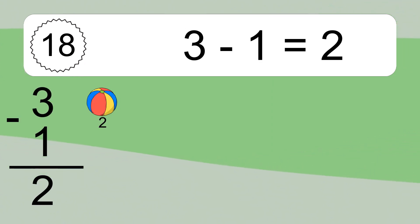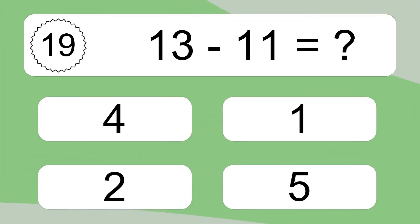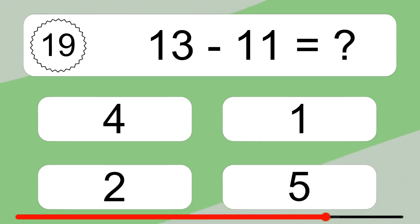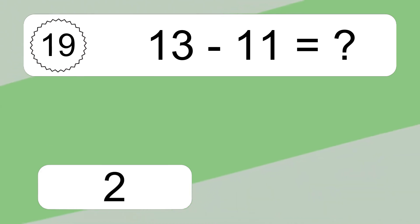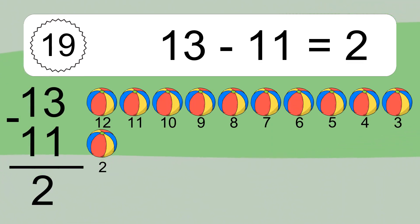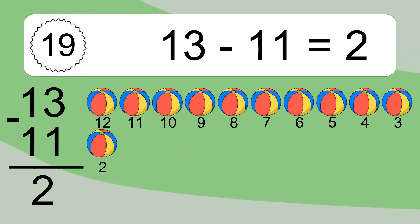13 minus 11 equals what? 13 minus 11 equals 2. Let's count it: 12, 11, 10, 9, 8, 7, 6, 5, 4, 3, 2.